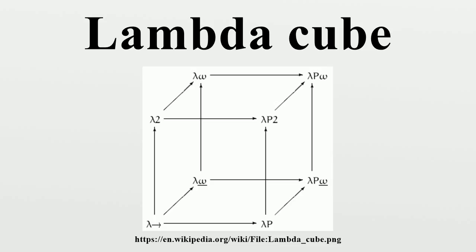The idea of the cube is due to the mathematician Henk Barendregt. The framework of pure type systems generalizes the lambda cube in the sense that all corners of the cube, as well as many other systems, can be represented as instances of this general framework. This framework predates the lambda cube by a couple of years.